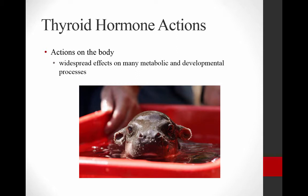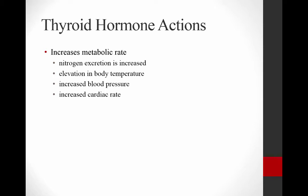I want to talk about exactly what thyroid hormone actions on the body are, because if you don't know what thyroid hormone does, you don't know what to anticipate if you have too much or too little. Thyroid hormones affect just about every cell, so if you have a disease that causes an increase or decrease of thyroid hormone, you're going to have widespread effects on many parts of the body. Some of the things thyroid hormone does: it increases metabolic rate, nitrogen excretion is increased, you can have elevation in body temperature, an increase in blood pressure, and an increase in cardiac rate — your body is being revved up by thyroid hormone.